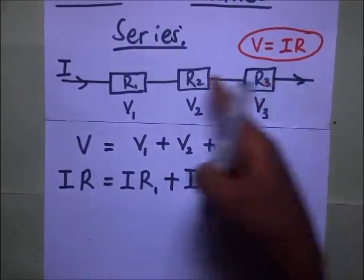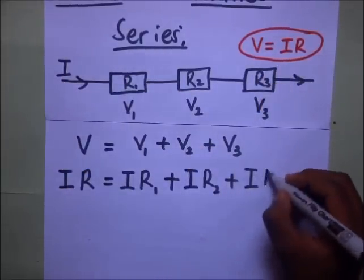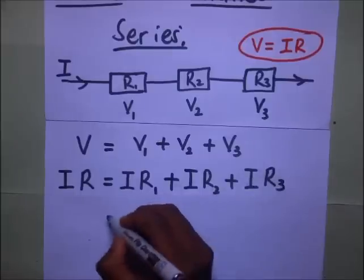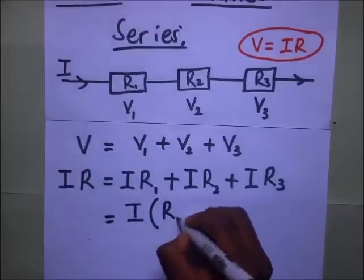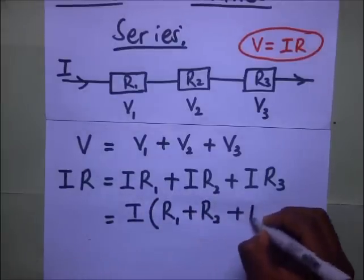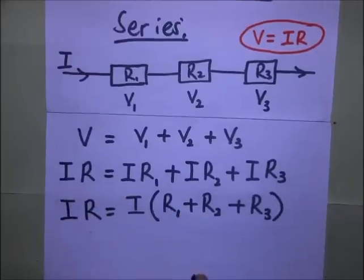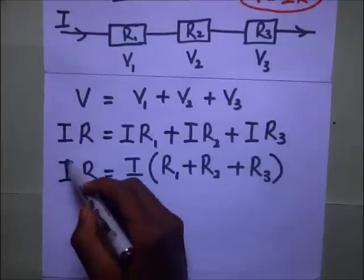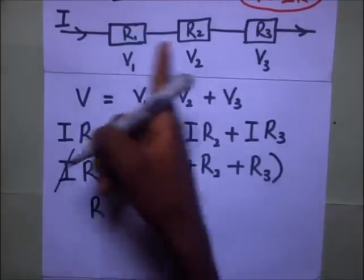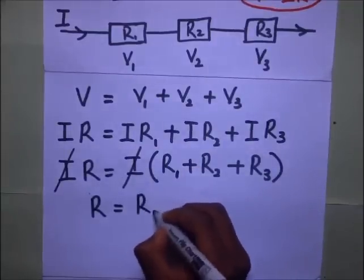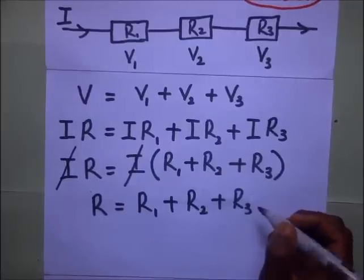Continuing: I·R1 plus I·R2 plus I·R3. If we factorize out I, we remain with I times (R1 plus R2 plus R3), and this equals capital I times capital R. The I on both sides cancels out, and we remain with the effective resistance capital R equal to R1 plus R2 plus R3.